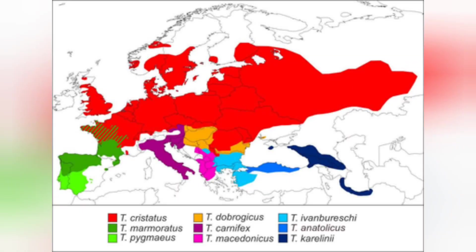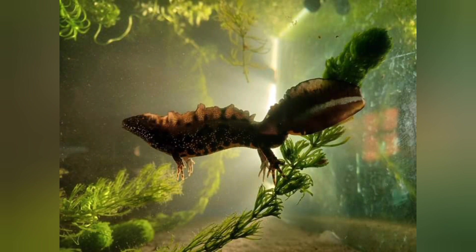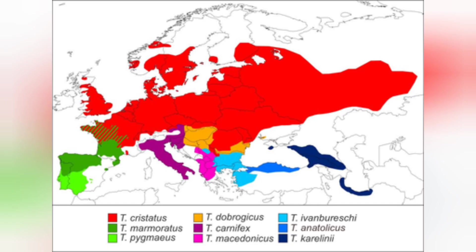The first thing that stands out is of course that massive splash of red across most of the map — that is Triturus cristatus, the great crested newt, also known as the northern crested newt. It has the greatest distribution of all the Triturus species across much of northern Europe, ranging from Great Britain and France in the west across to the Russian Federation in the east. In the UK it is a bit patchy in its distribution, missing from probably all of Cornwall, much of Wales, and much of Scotland, as you can see there.